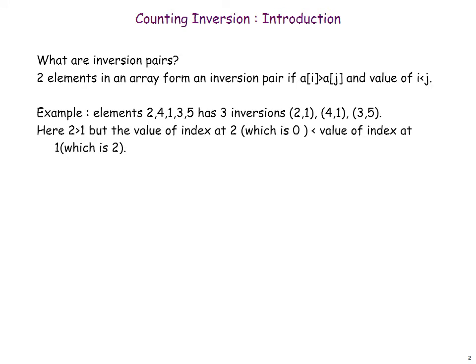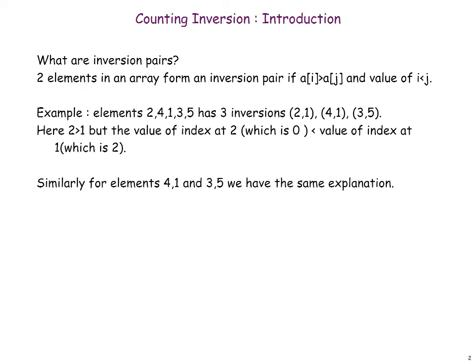Here, 2 is greater than 1 but the index of 2 which is 0 is smaller than the index of 1 which is 2. Similarly, for (4,1) and (4,3) we have the same explanation.